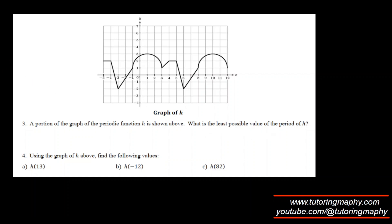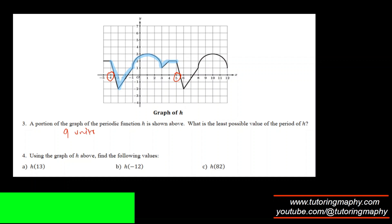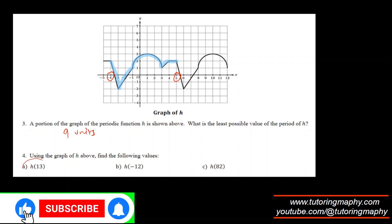For the second graph, finding the least possible period: starting from negative 4 and ending at 5, where the function repeats itself. That's negative 4 to 5, which is 9 units. So the period is 9 units.